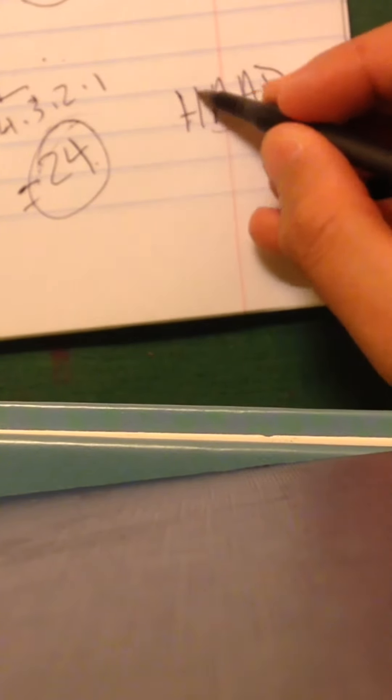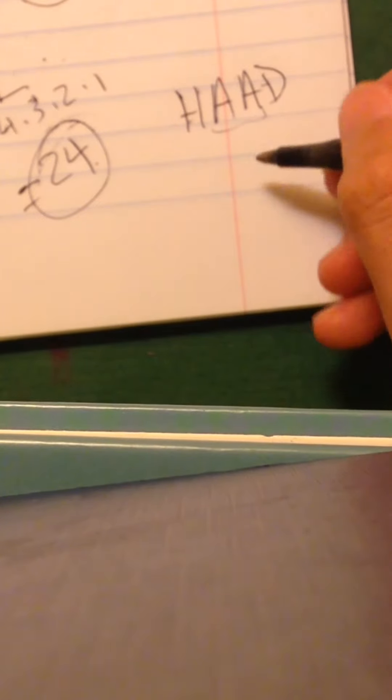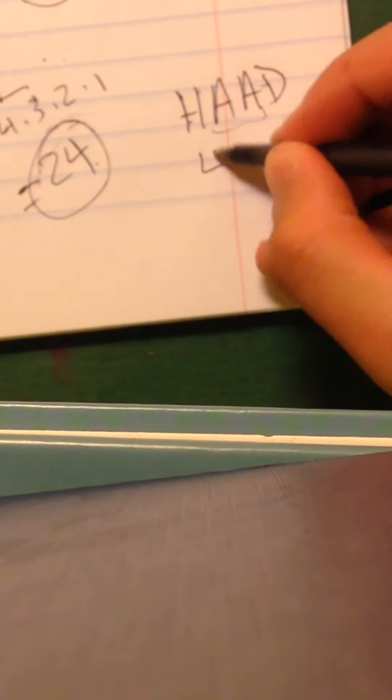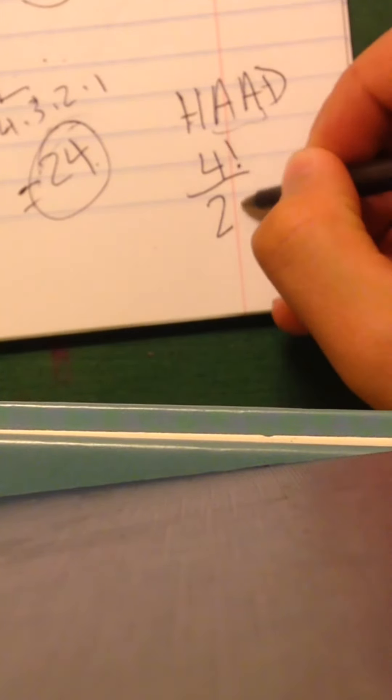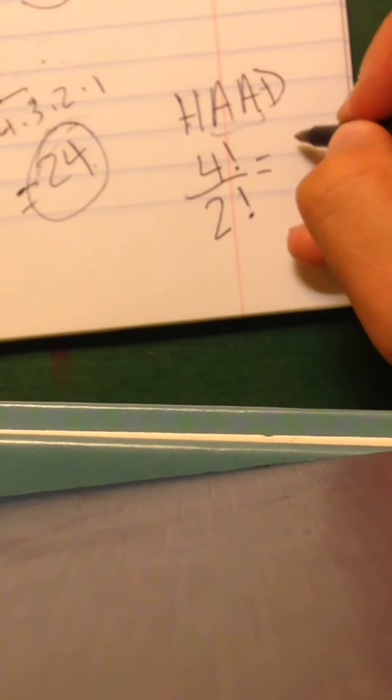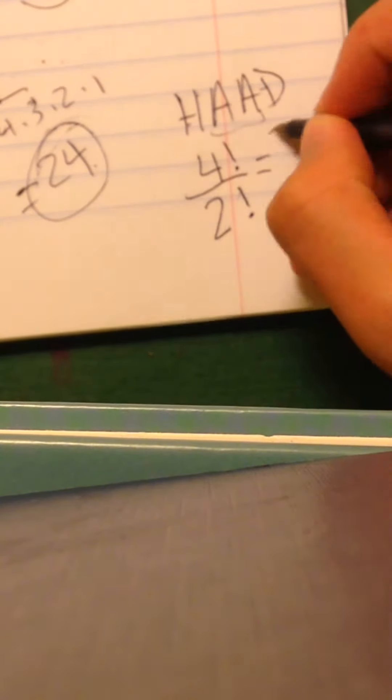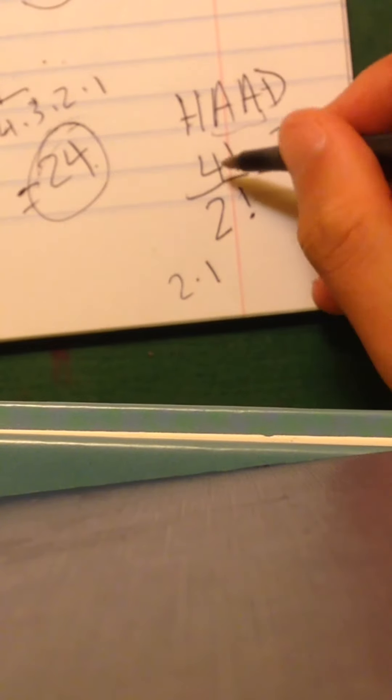That means we get the total amount of letters in this word, which is four, over how many repeating letters, which is two. So it's going to be the factorial of four divided by the factorial of two. So the factorial of four, as we said, is twenty-four. Four times three times two times one is twenty-four. Over the factorial of two, which is two times one, that's going to be two. So the factorial of four divided by the factorial of two is going to be twenty-four divided by two, which is twelve.